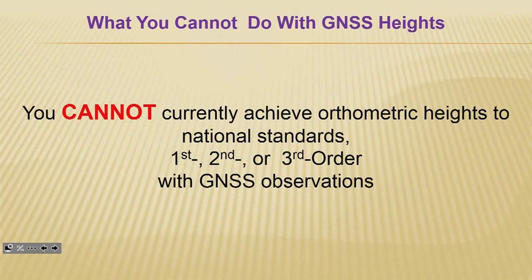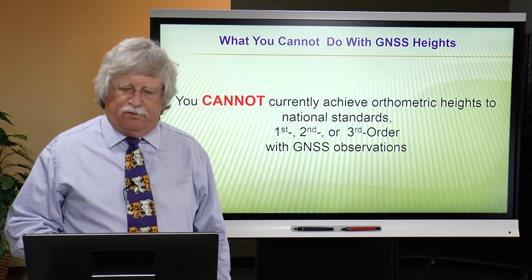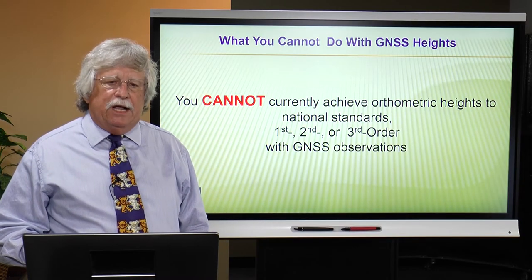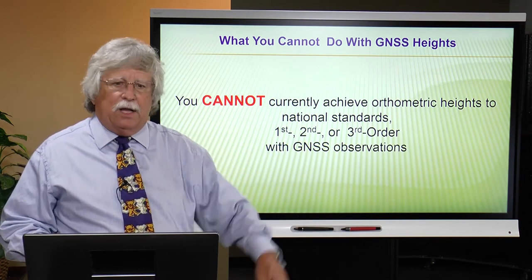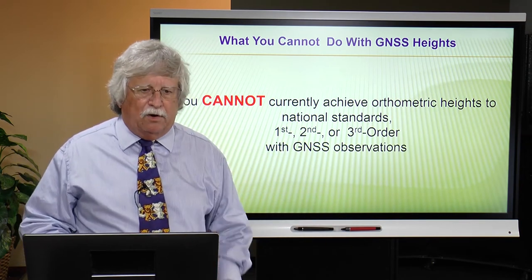NGS produces a color-coded map that tells you how good the quality of the geoid model is in your backyard. And let's understand — you cannot currently achieve NAVD88 or other island datum heights at national standards. The national standards being referred to are first, second, or third order. I can't tell you how many times I have personally run into a surveyor saying, 'I want to get second order or first order heights using GNSS' — you cannot do that, and probably may never be able to achieve those levels of integrity with GNSS measurements.